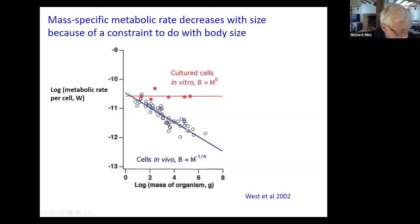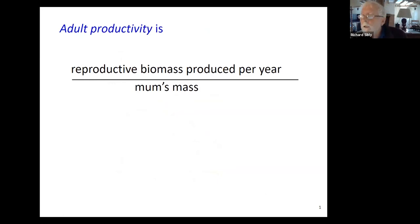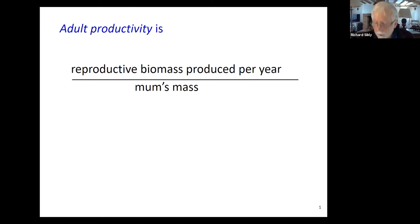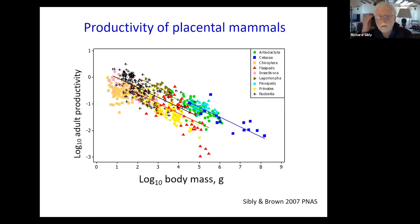I'm now going to turn to the consequences for the life history. I'm going to talk in terms of productivity. For reproduction, productivity is the reproductive biomass produced per year divided by the mother's mass — putting it on a per gram basis. So productivity is per gram.